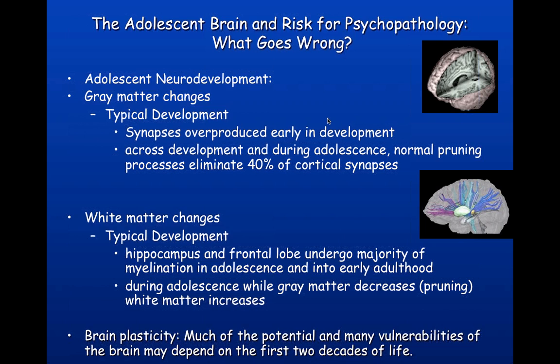During adolescent neurodevelopment, there are changes in the gray matter — these are the neurons, our brain cells. During typical development, synapses — connections between neurons — are overproduced early in development. But during adolescence, synaptic pruning eliminates about 40% of our cortical synapses. Basically, our brain is becoming more efficient as these exuberant connections are pruned down.